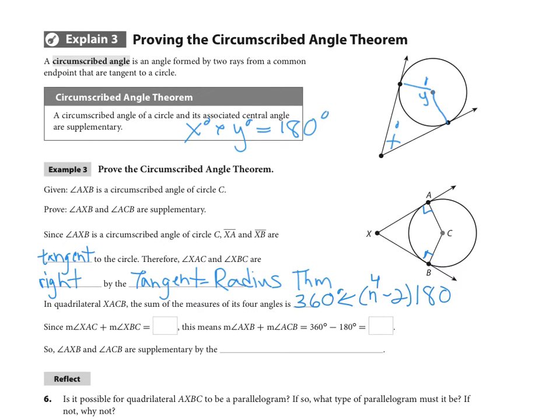Since we know that the measures of XAC and XBC, both being 90, are going to equal 180 degrees, then that means that angle AXB plus ACB has to be equal to the total 360 that we started with minus the 180 that we've already used, and so we are at 180 degrees.